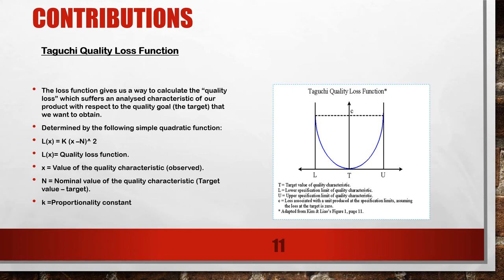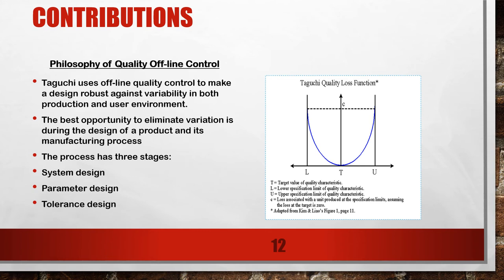Taguchi's quality loss function. The quality loss function is the loss imparted to society by the product from the time the product is designed to the time it is shipped to the customer. This can be determined using a simple quadratic function. The T represents the target value of the quality characteristics, L represents the lower specification limit, U is the upper specification limit, and C is the loss associated with a unit produced at the specification limit, assuming the loss at the target is zero.